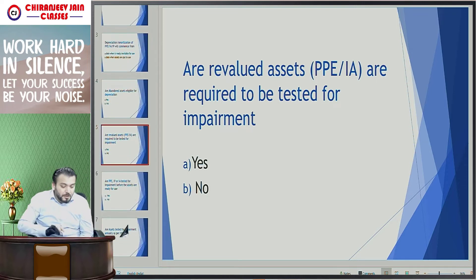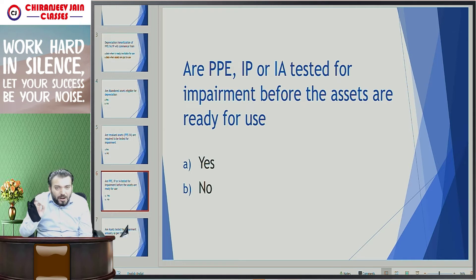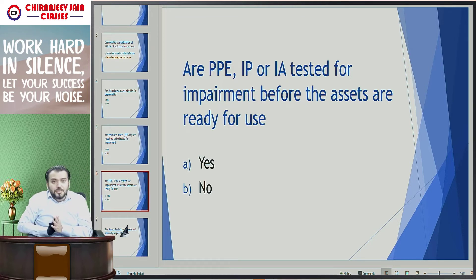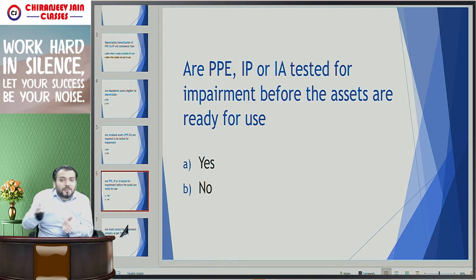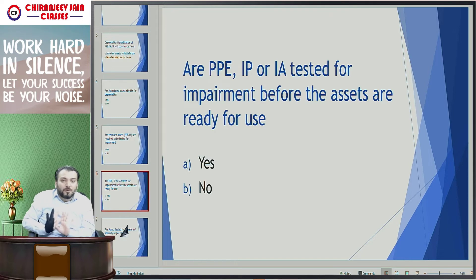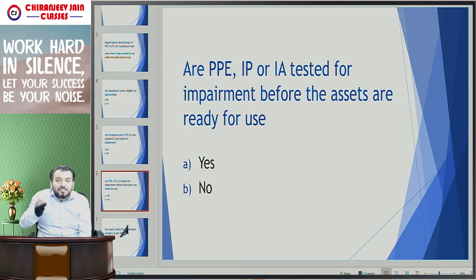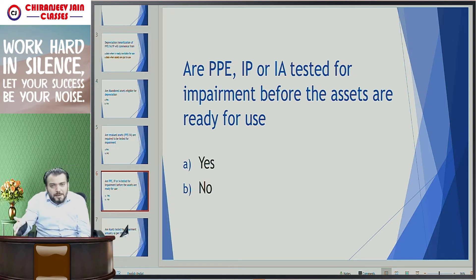What is the second question? Are PP&E, investment property, or intangible assets tested for impairment before the asset is ready for intended use? Means, whether such assets are required to be tested for impairment before they are ready for intended use? The answer is no. Normally, subsequent recognition will start once the asset is ready for use, and an asset is tested for impairment under subsequent recognition, not under initial recognition. Once the asset is ready for its intended use or available for its intended use, then only such asset may be depreciated or impaired. But there is one exception to this rule.